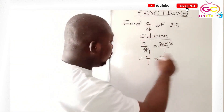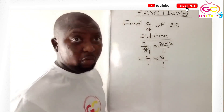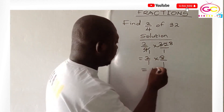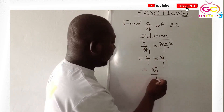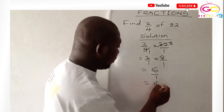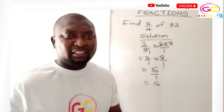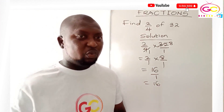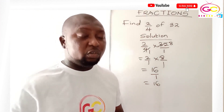Now we multiply horizontally: 2 times 8 gives us 16, and 1 times 1 gives us 1. Any number over 1 is the same as that number, so our answer is 16. I believe you got it!